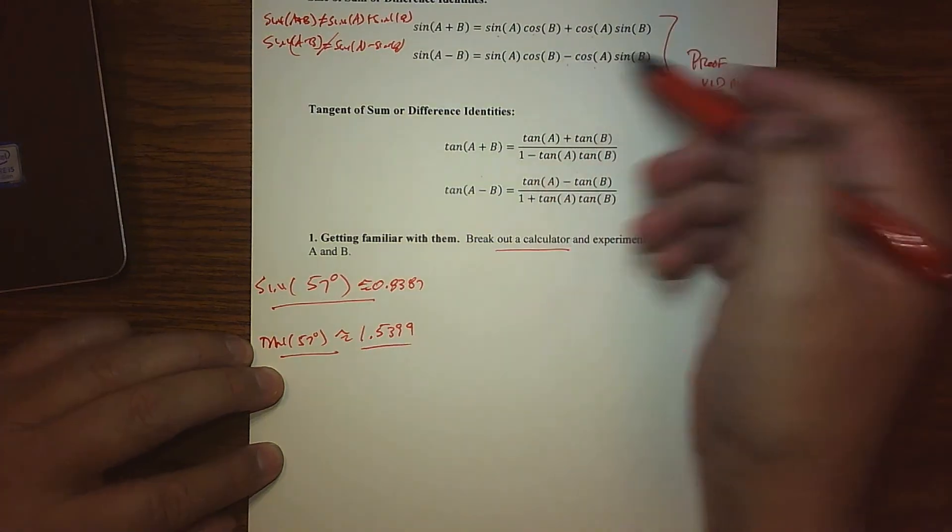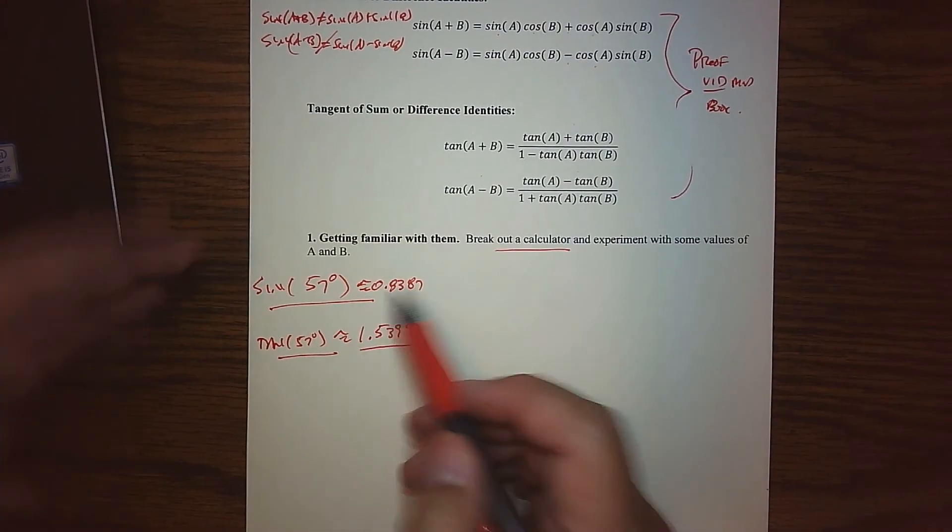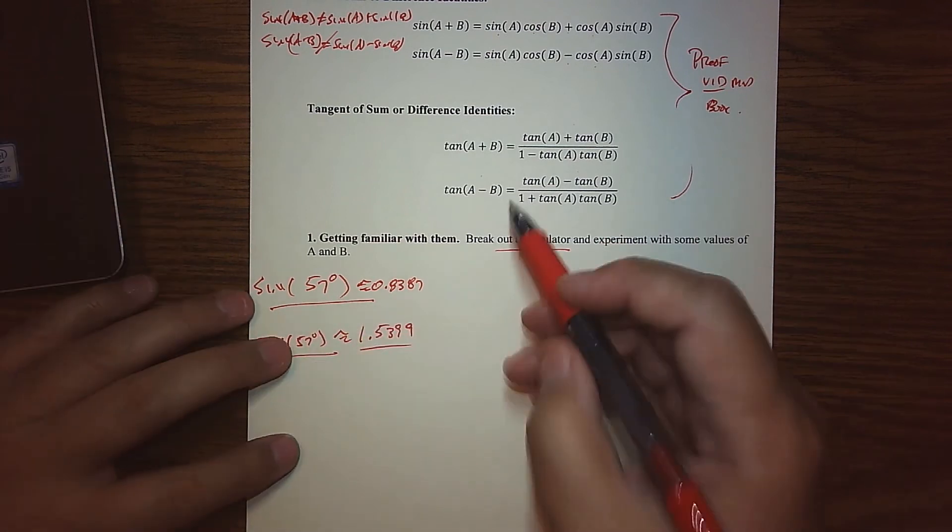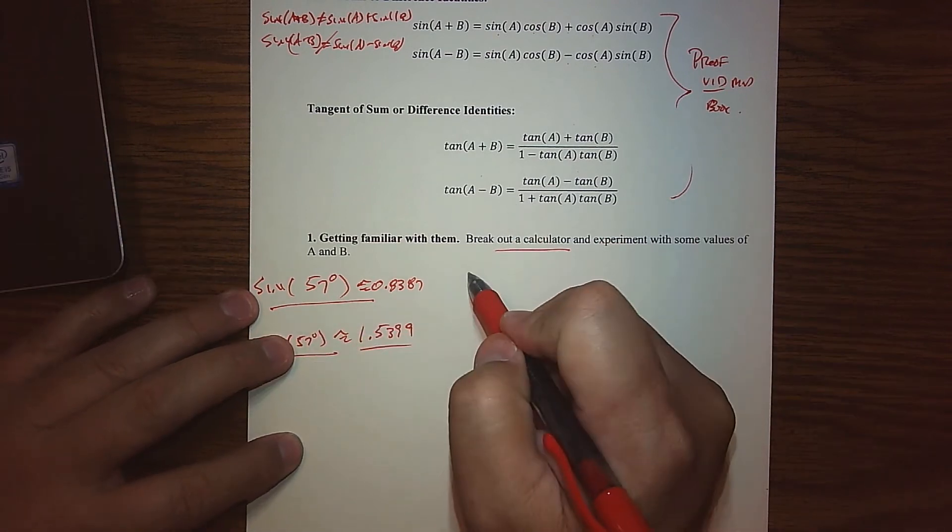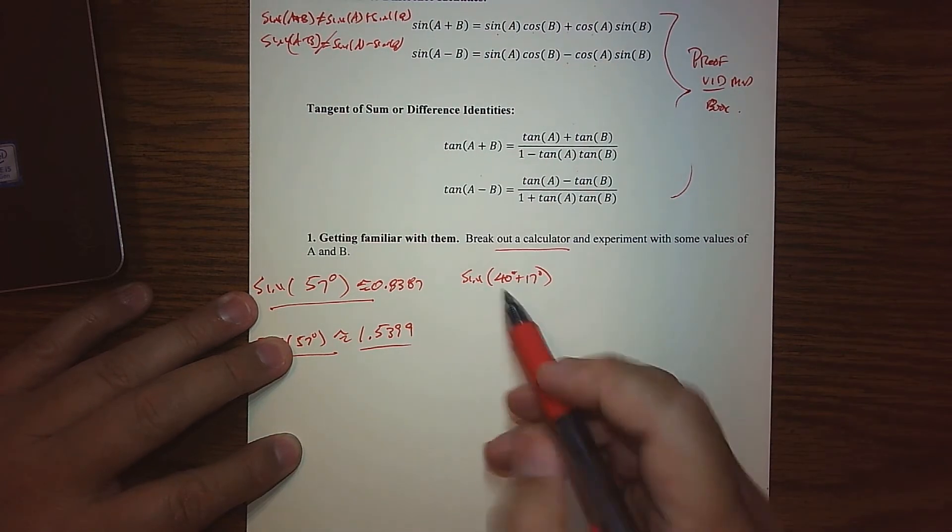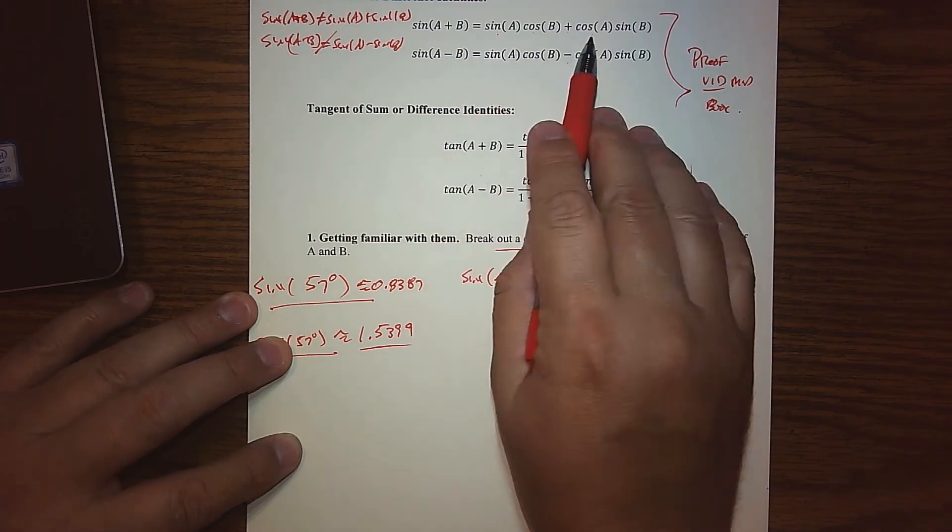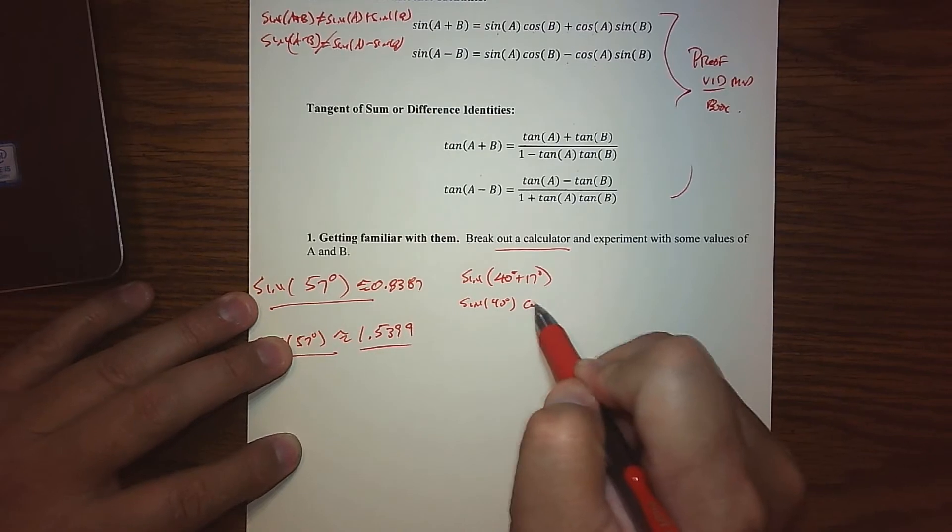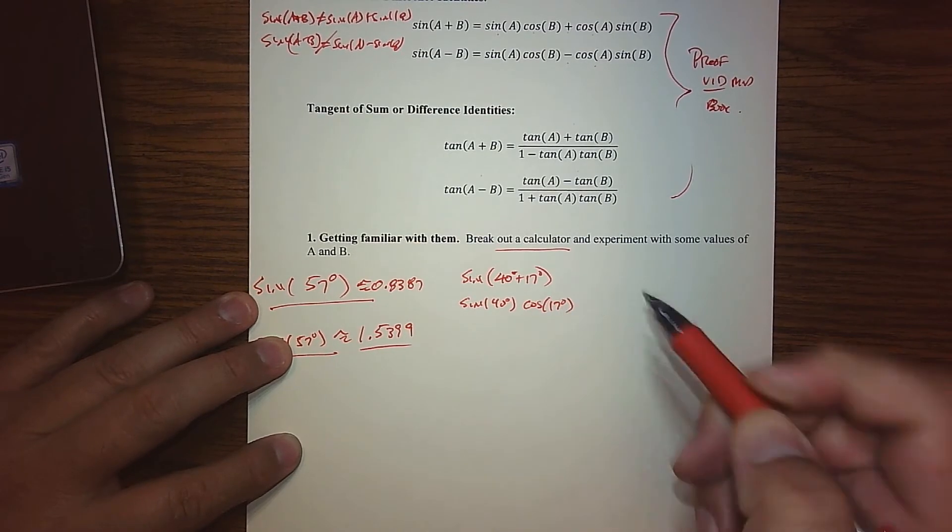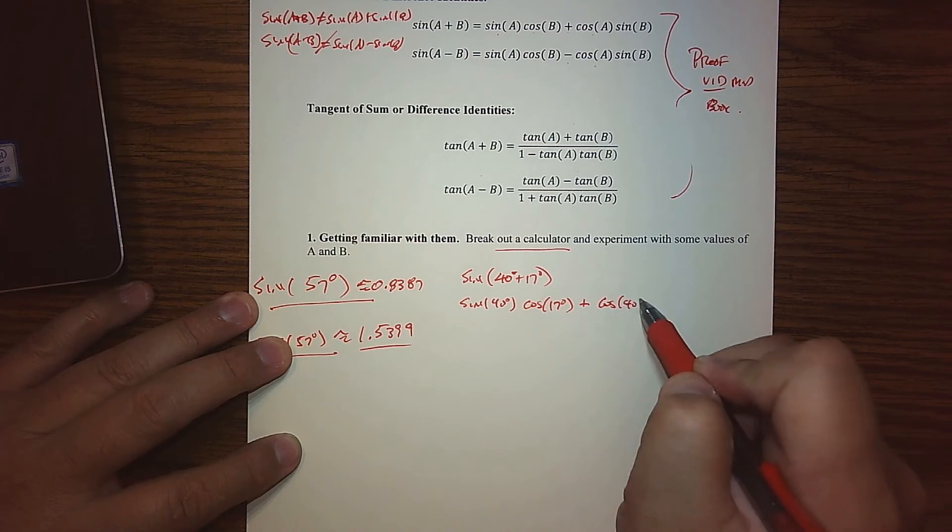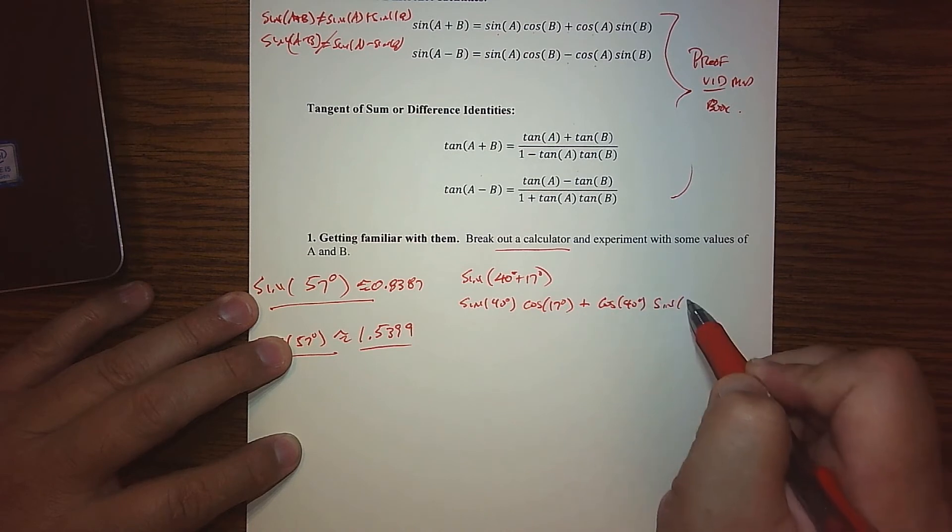So in terms of using these identities, what adds up to 57? Lots of things do. You could be creative, but off the top of my head, I think 57 is basically 40 plus 17. So if I write it as a sum using the formula up here, it's the sine of the first angle times the cosine of the second. And then we're going to add the cosine of the first angle and the sine of the second.